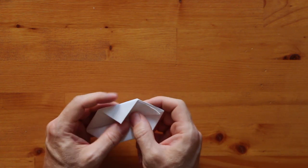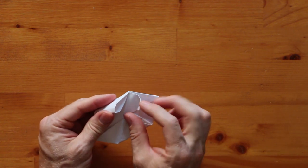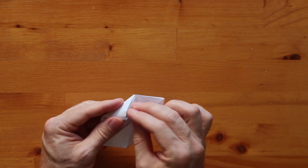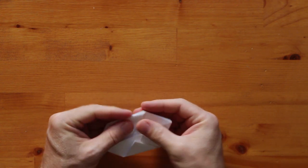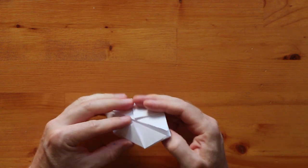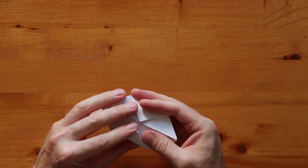And you're going to do the same thing with the other three. So open up the pocket, stick that tip in, and then fold it back down. And again here. We're doing this so that the balloon doesn't explode back into a full sheet of paper when we try to inflate it.